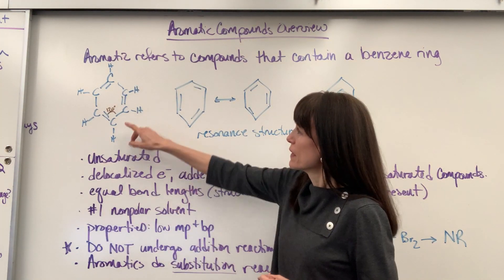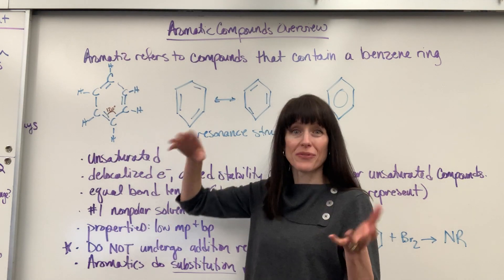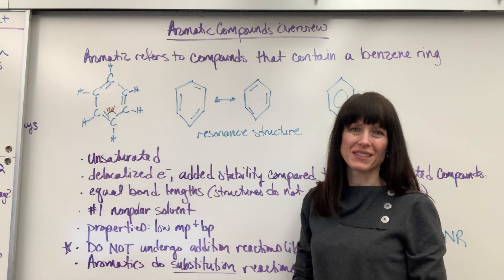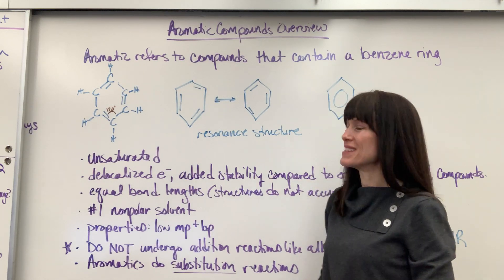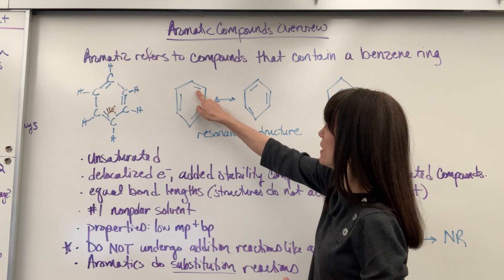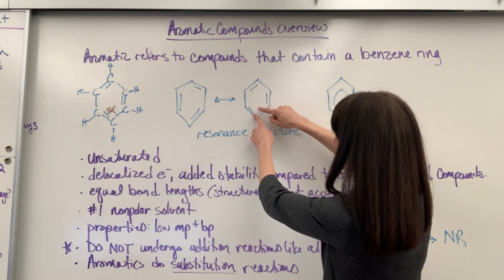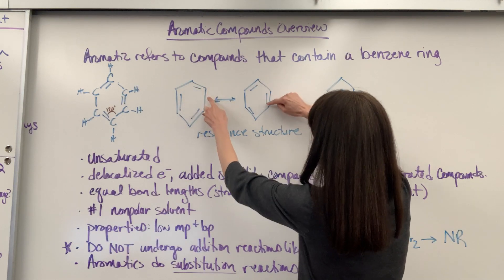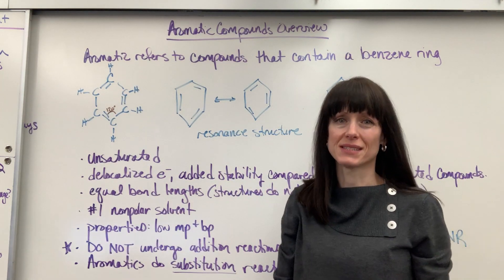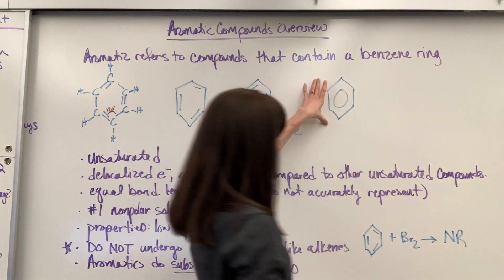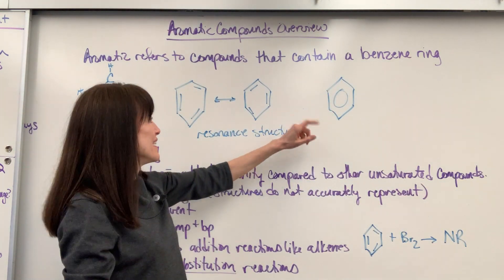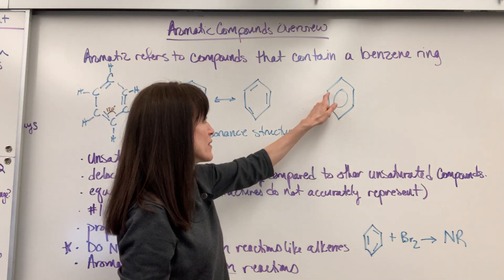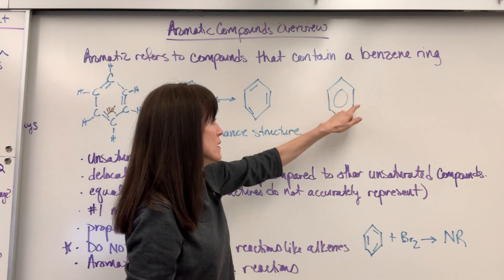In reality, these double bonds move — they resonate back and forth. This is the skeletal structure for a benzene ring. Notice the three double bonds, and then over here they're all just alternated. How this really exists in nature is as one molecule where the double bond resonates back and forth. We can draw a circle here showing that they're actually constantly moving.